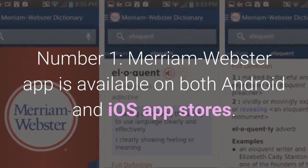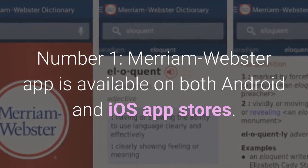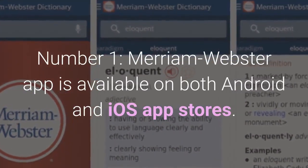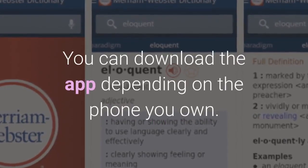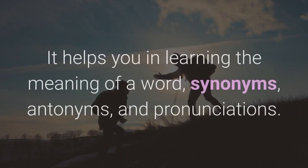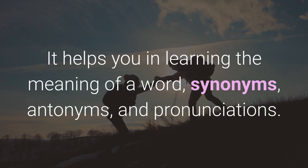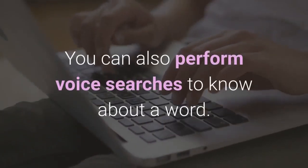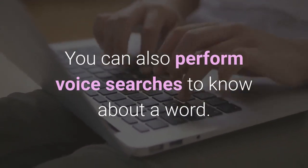Number 1: The Merriam-Webster app is available on both Android and iOS app stores. You can download the app depending on the phone you own. It helps you in learning the meaning of a word, synonyms, antonyms, and pronunciations. You can also perform voice searches to know about a word.